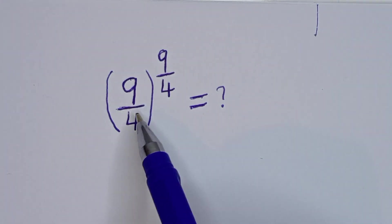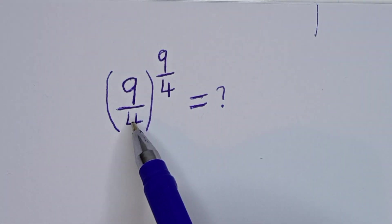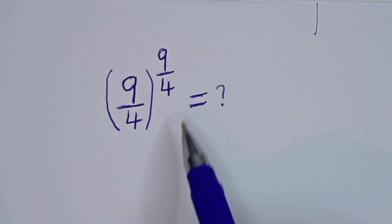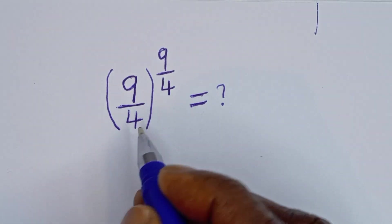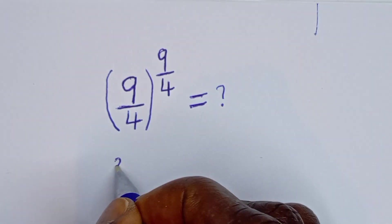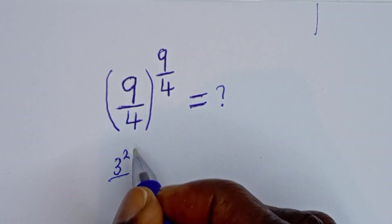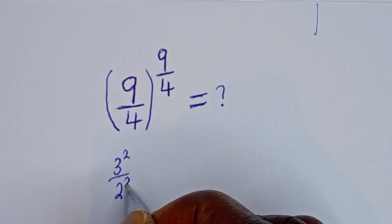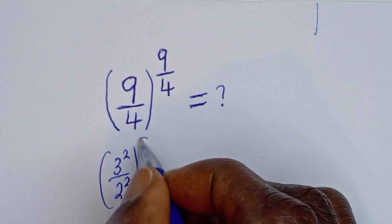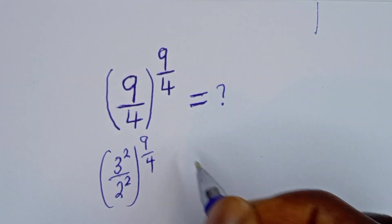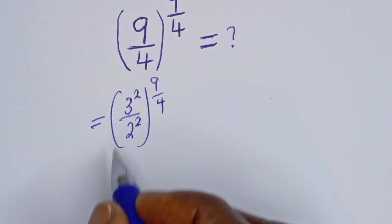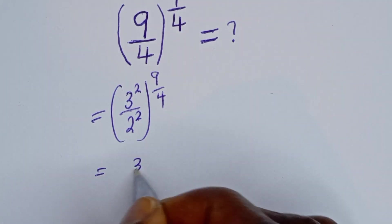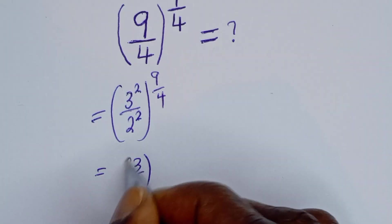How to simplify this problem without using a calculator: 9 divided by 4, to the power of 9 divided by 4. From here, 9 divided by 4 can be written as 9 — which is 3 squared — divided by 4, which is 2 squared, all to the power of 9 over 4.